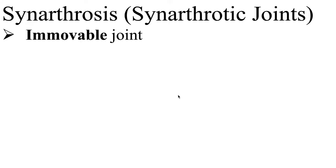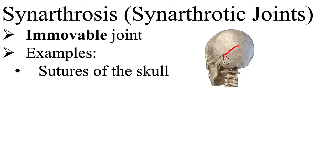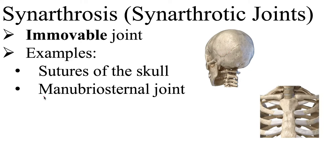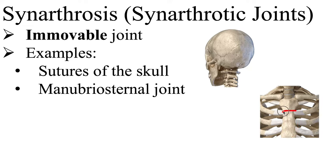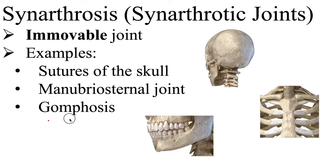These types of joints can be of significance because they offer the underlying organs protection. For example, we have the sutures of the skull — these immovable sutures help protect the brain. Also, the cartilaginous manubriol sternal joint, where the manubrium and the sternum articulate, and this immovable joint helps to protect the heart. Therefore, it makes sense why these joints would need to be immovable.